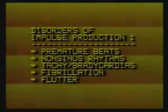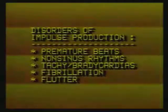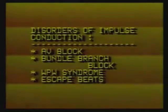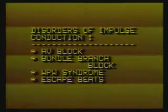Arrhythmia is a disturbance in the rhythmic contractions of the atria and ventricles due to disorders in impulse production or impulse conduction. Disorders in impulse production may result in arrhythmias like premature beats, non-sinus rhythms, tachycardias, bradycardias, fibrillation and flutter. Disorders in impulse conduction may result in partial or complete heart block or AV block, right and left bundle branch blocks, WPW syndrome and sinus pause with escape beats.